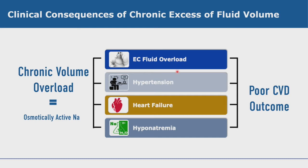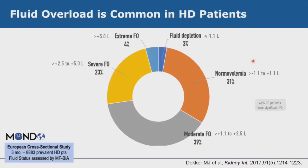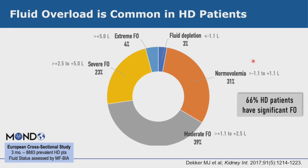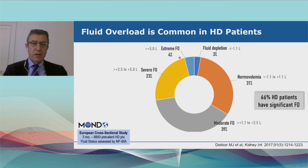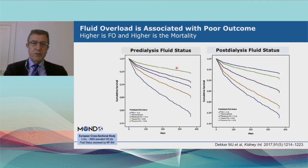Looking at fluid overload, hypertension, heart failure, and hyponatremia as contributing factors: a retrospective study using bioimpedance measurement showed that almost two-thirds of hemodialysis patients present some degree of fluid overload. Interestingly, 25% — one quarter — present with very severe or extremely severe fluid overload, meaning that even in well-treated patients, we have a lot of issues with fluid management.